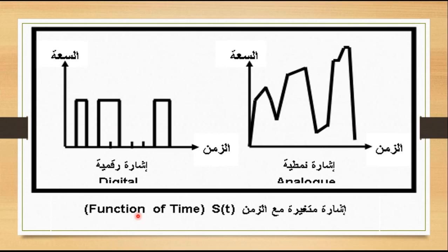الإشارة الأنالوج بتكون متصلة وبتتغير قيمتها مع تغير الزمن. لكن في الإشارة الرقمية أو الديجيتال بتبقى على شكل نبضات متقطعة بتبقى لها قيمة ثابتة. اللي بنقول عليها في الديجيتال صفر أو واحد. يبقى هي إشارة متقطعة بتبقى موجودة على هيئة نبضات ولها قيم ثابتة، ونقدر نمثلها ونقول عليها الزيرو والوان.